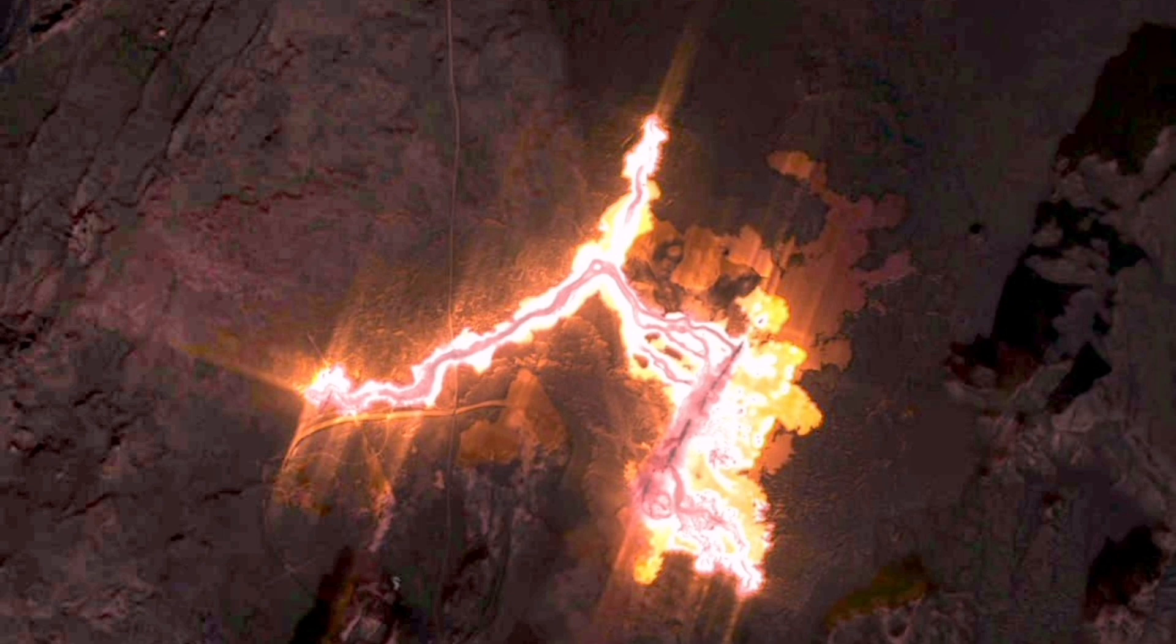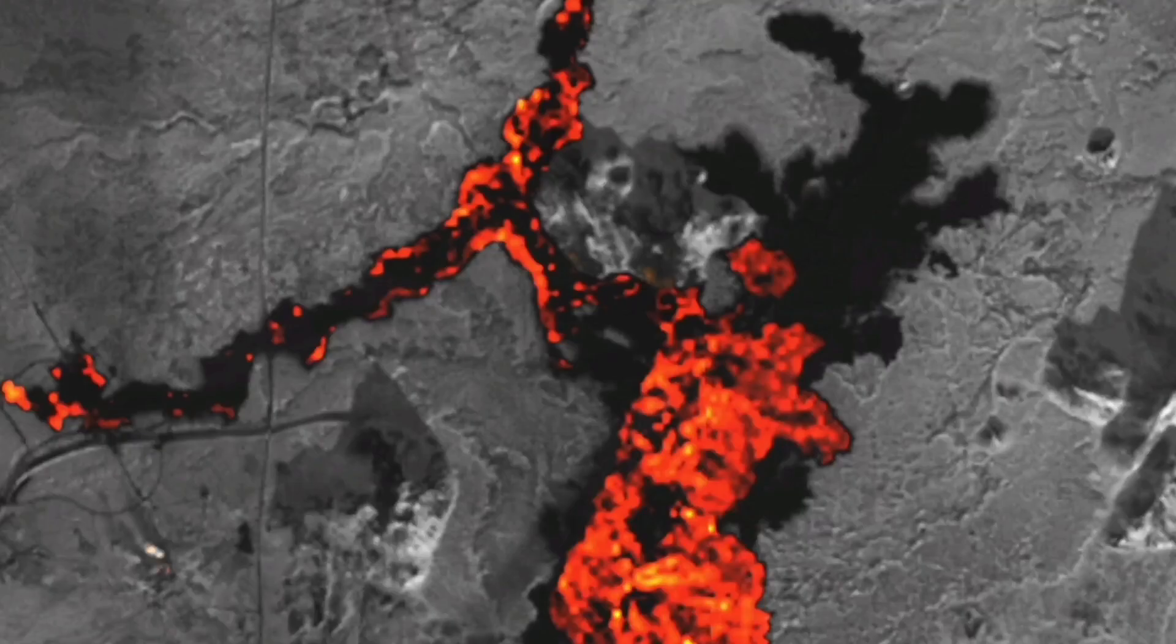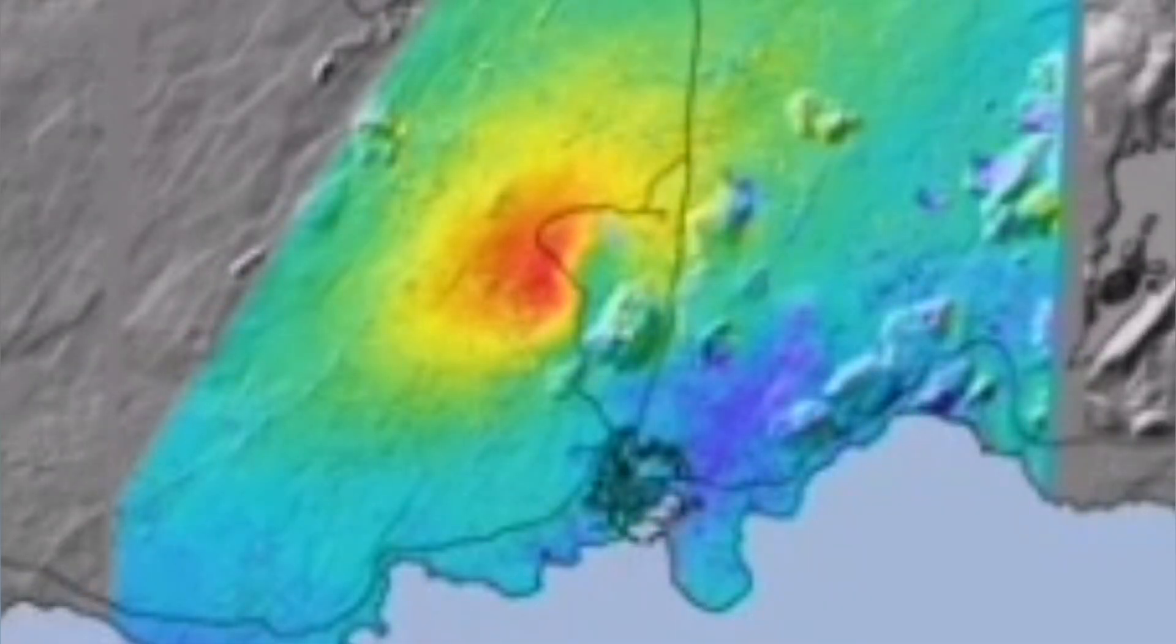And presto, we had it here near the Svartsengi geothermal power plant, near the old Sundhnúkar craters. Just a tongue of it went around and encircled, following the contour of the ground.